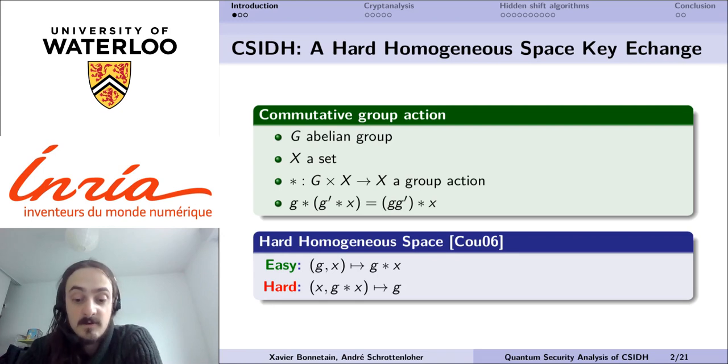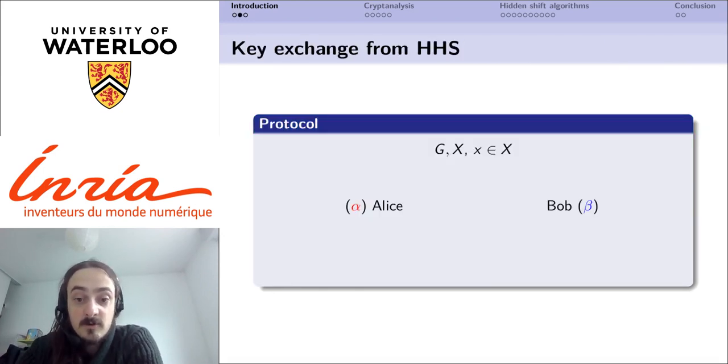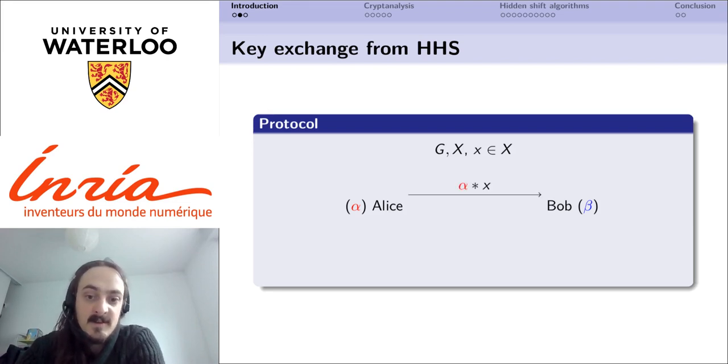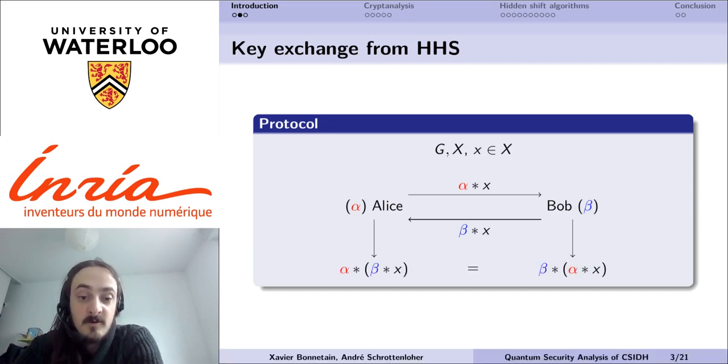From such a space, it is very simple to devise a non-interactive key exchange. Two parties only have to agree on a base point X and to choose a secret group element, alpha and beta. Then they will both exchange the group action of their secret element over the base point, and from this information they can agree on a shared secret by applying their secret element on the values they've received.